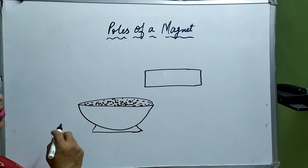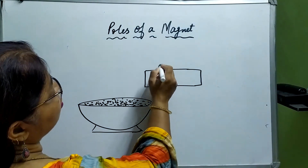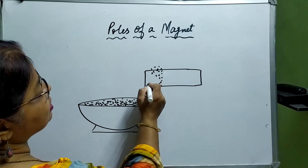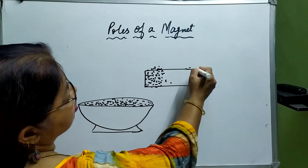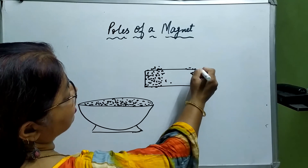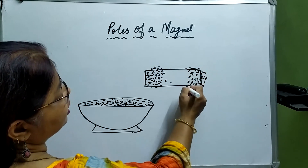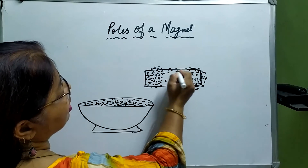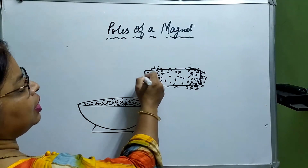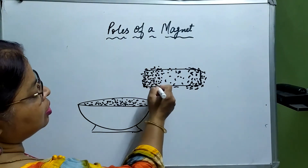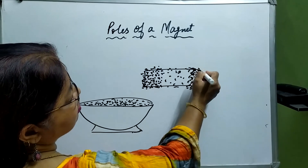When we put this Magnet in the Iron Filings, what we observe is that maximum of the Iron Filings get stuck to two parts. When this Magnetic Bar is kept in the Iron Filings, it has Iron Filings all around it, but the density or quantity of the Iron Filings is maximum on the ends.